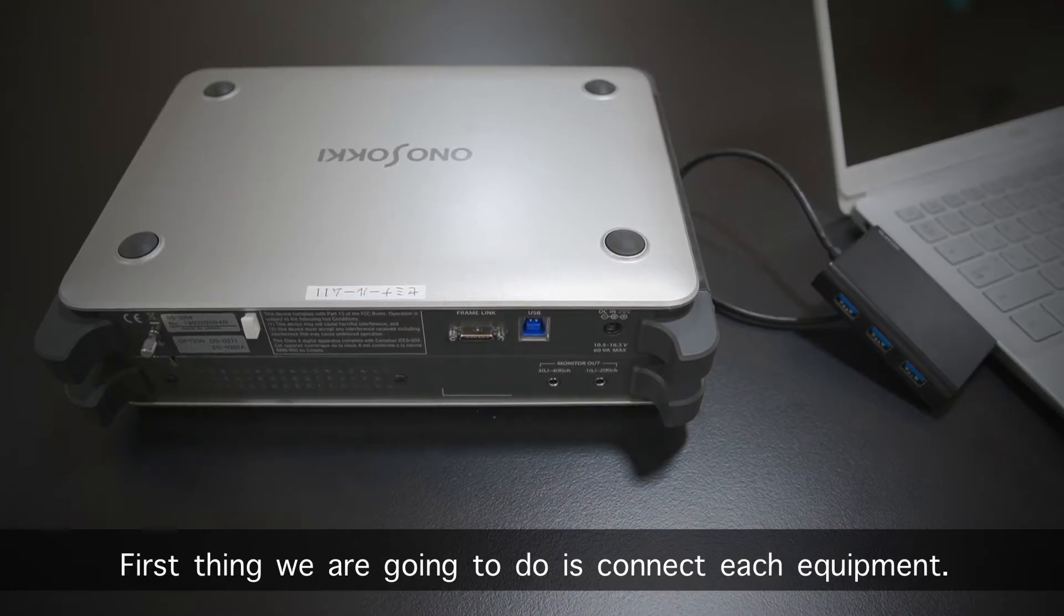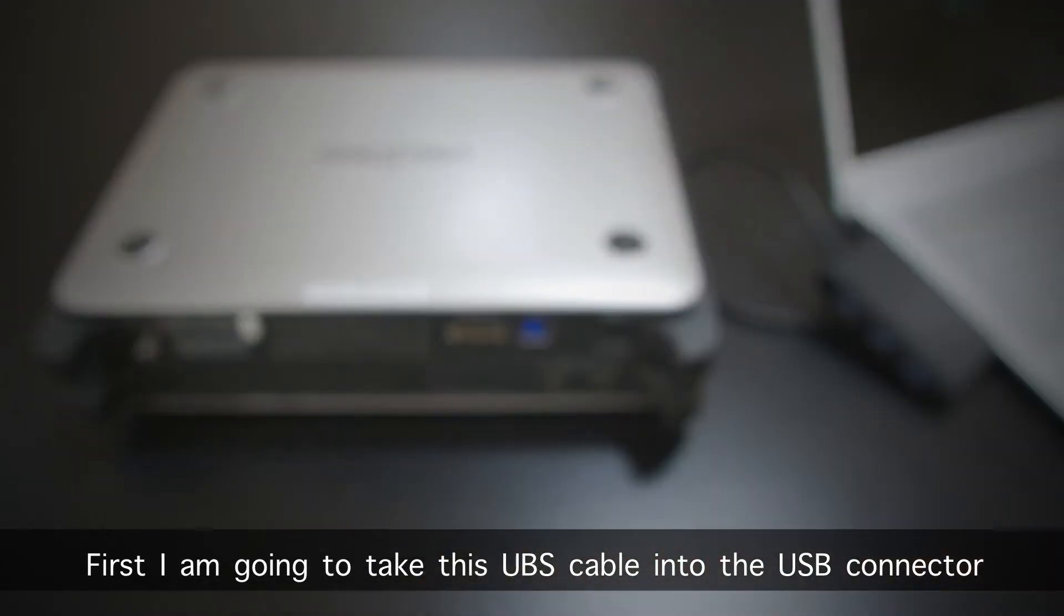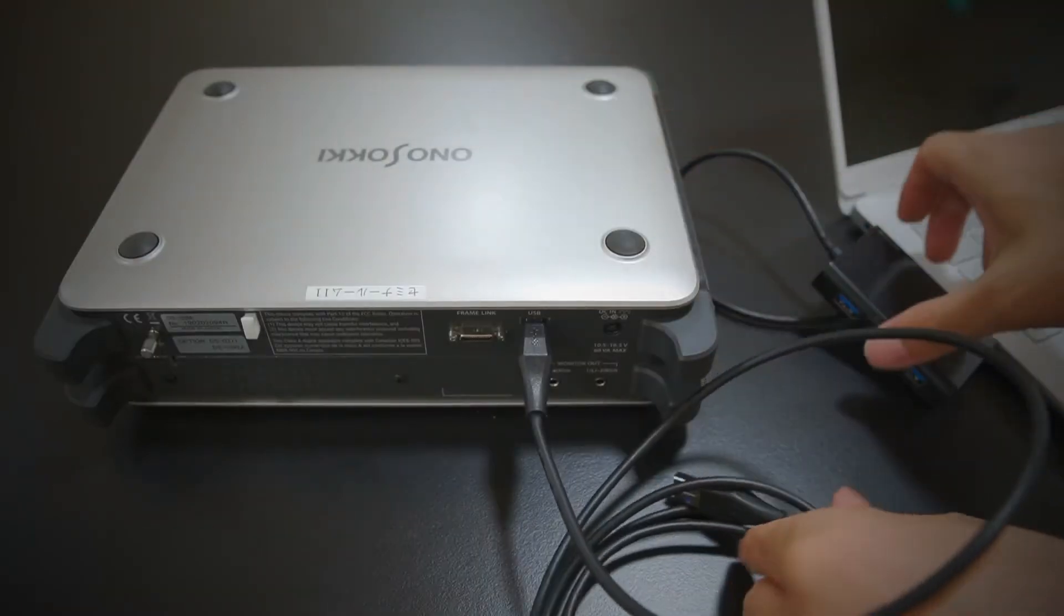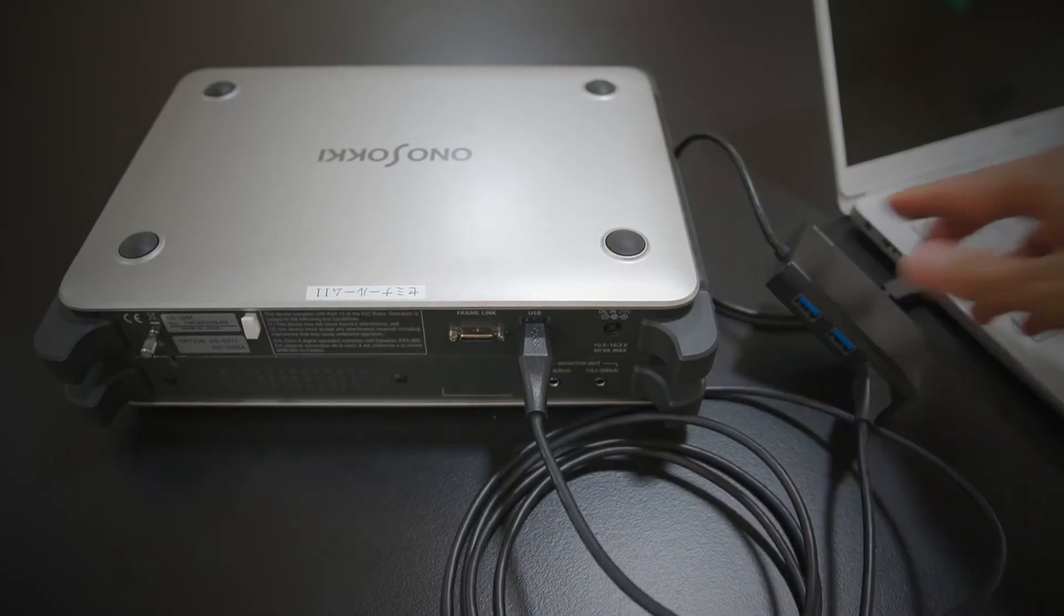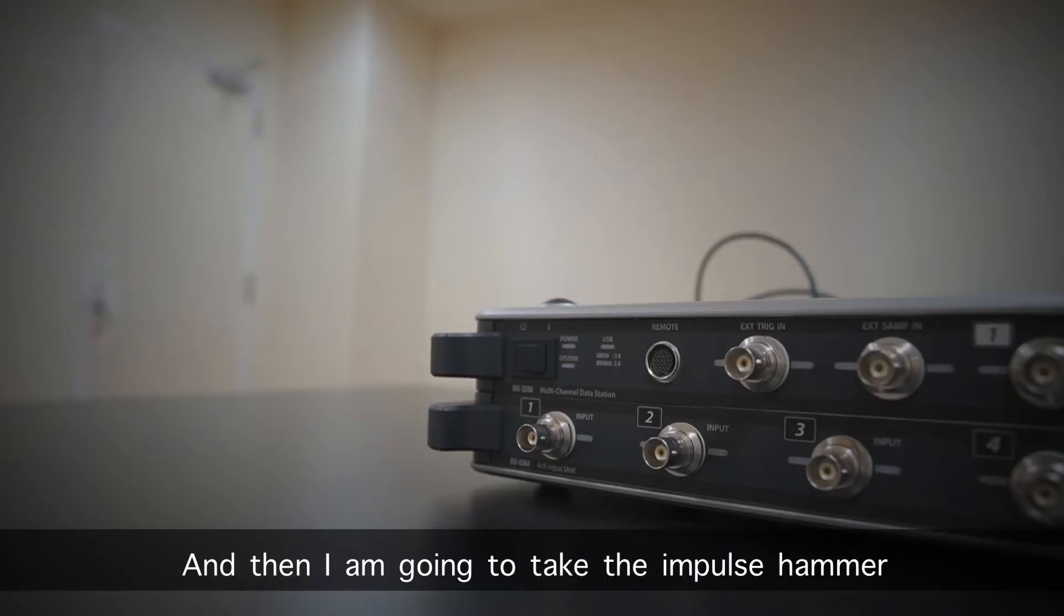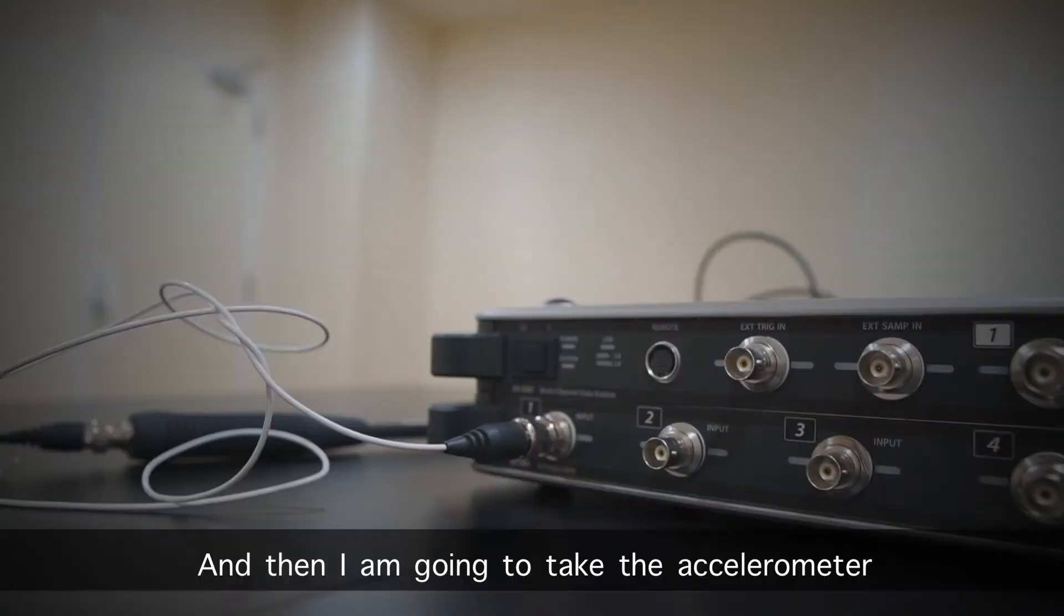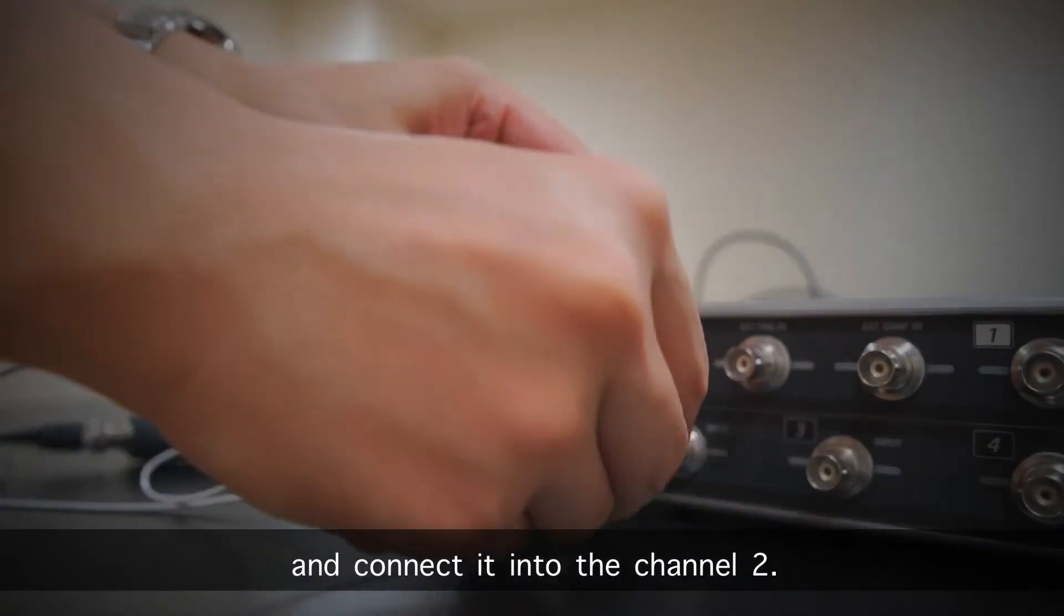First thing we're going to do is connect each equipment. First, I'm going to take this USB cable into the USB connector at the DS-3000 and my laptop. And then, I'm going to take the impulse hammer and connect it into channel 1. And then, I'm going to take the accelerometer and connect it into channel 2.